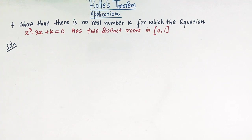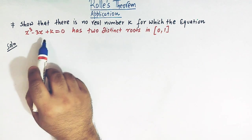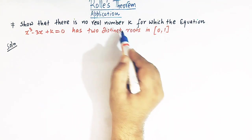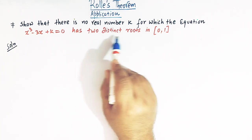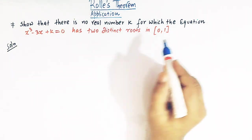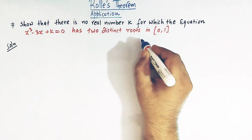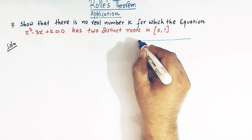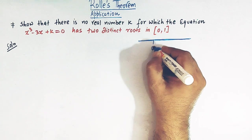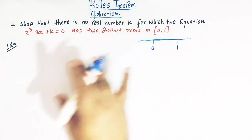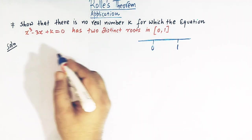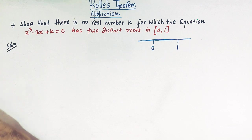We will solve this problem with the help of Rolle's theorem. We are given a cubic equation and have to show that there is no real number k for which this equation has two distinct roots in the interval [0, 1]. We will make use of the method of contradiction.